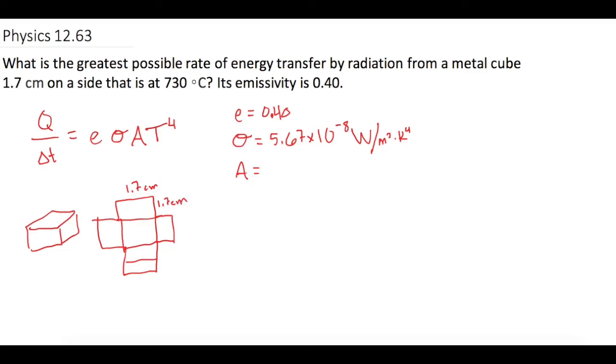So what we can do is let's find the area of just one of the sides and then multiply it by 6 sides.